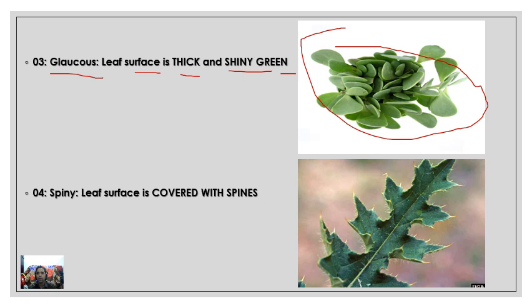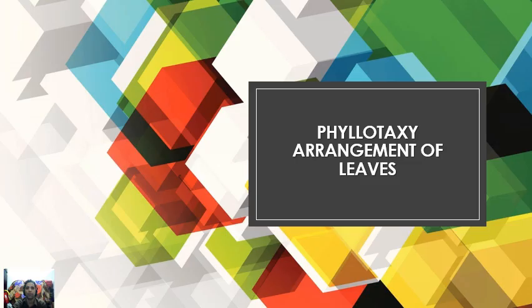Next is the glaucous leaf — this leaf is thick, green, and shiny. Such leaves are often soft in nature but thick and shiny. Then there is the spiny leaf: the leaf has many spines present over its whole surface. It is also deeply incised in nature, but because it produces so many spines, it is called a spiny leaf.